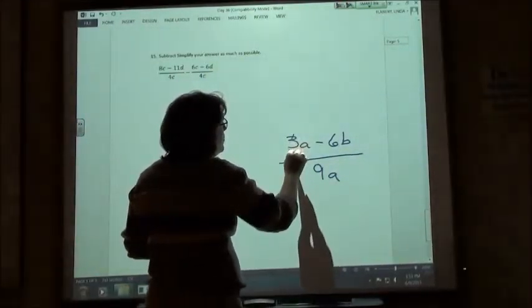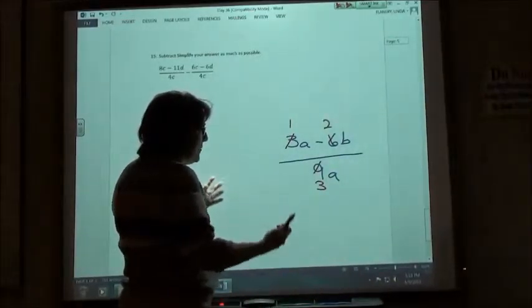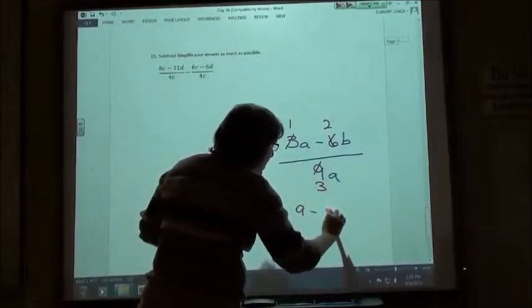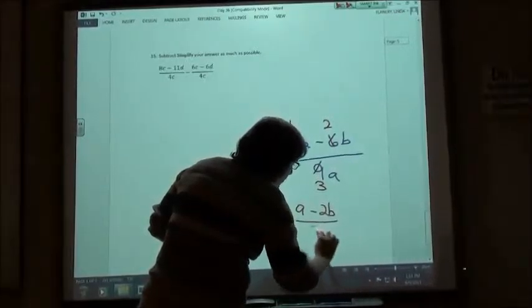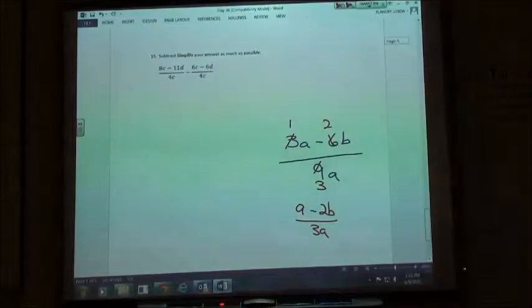So in simplest form, I would have a minus 2b over 3a. Won't happen a lot, but it is something you need to watch for because the directions do say simplify as much as possible. So if all three of my numbers are divisible by the same thing, I'm going to reduce it.